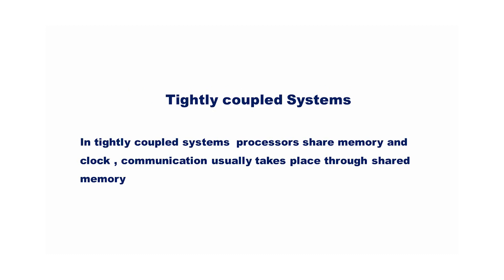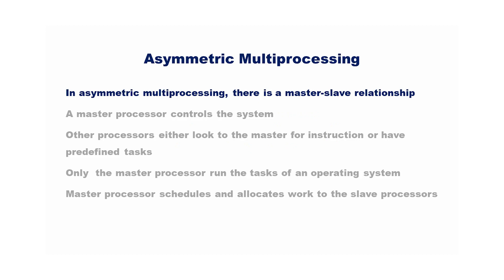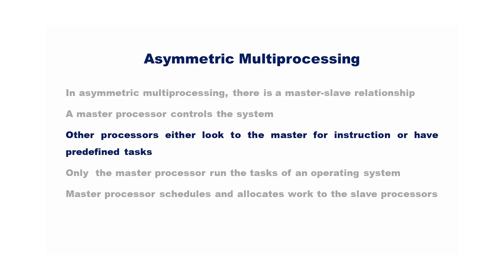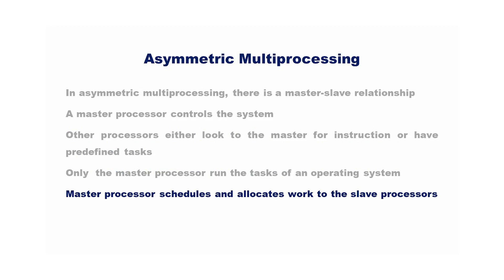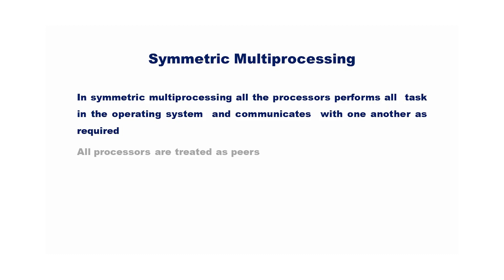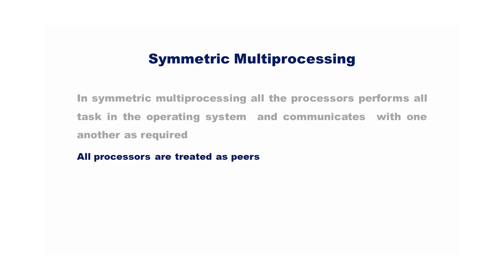Tightly coupled systems are of two types: asymmetric multiprocessing and symmetric multiprocessing. In asymmetric multiprocessing, there is a master-slave relationship. A master processor controls the system, and other processors either look to the master for instruction or have predefined tasks. Only the master processor runs the operating system tasks and schedules and allocates work to the slave processors. In symmetric multiprocessing, all the processors perform all the tasks of the operating system and communicate with one another as required. All processors are treated as peers.